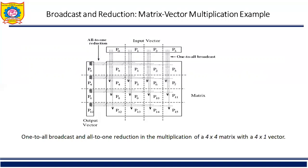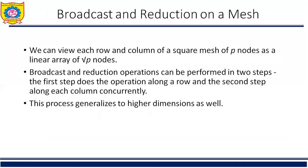This is the matrix vector example. After this, we look at broadcast and reduction on mesh. We can regard each row and column of a square mesh of p nodes as a linear array of root p nodes.